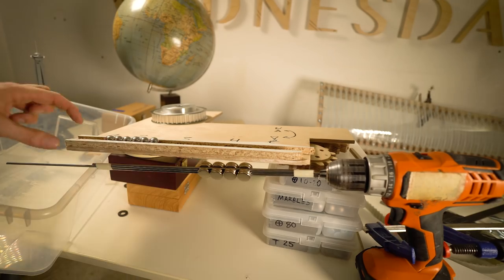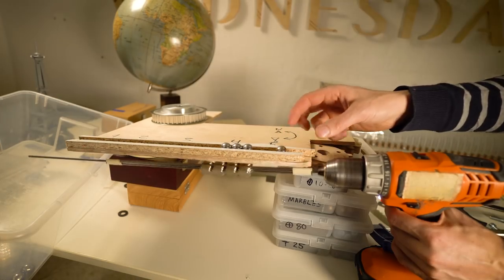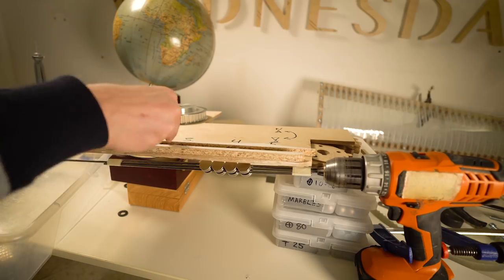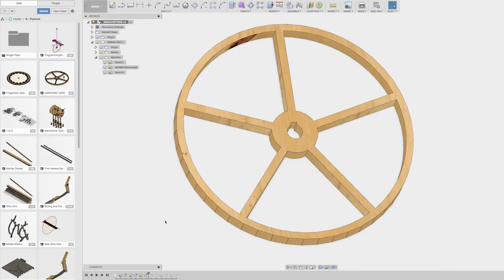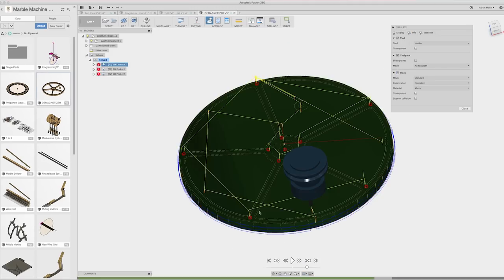So now I knew that the principle of demagnetization by alternating decreasing magnetic field worked. But the question remained, how do I implement this into the Marble Machine X in an elegant way?